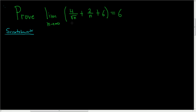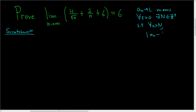In order to figure this out, we have to use the definition of convergence for sequences. So a sub n converges to L means for every positive epsilon greater than 0, we can find a positive integer N such that for all little n bigger than capital N, the distance between the terms of the sequence and the limit can be made arbitrarily small — so smaller than epsilon. In this case, this is our a sub n, and this is L.